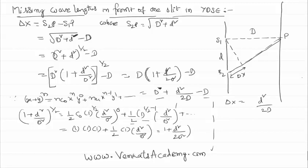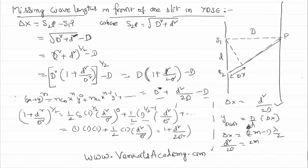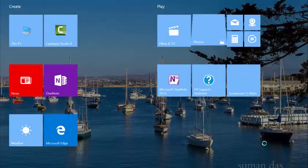Now that we know Delta X, we can use the formula for dark spots. The missing wavelengths condition uses the dark spot formula, where Delta X equals (2m minus 1) times lambda by 2. We have found Delta X equals d squared by 2D. So substituting, (2m minus 1) times lambda by 2 equals d squared by 2D.